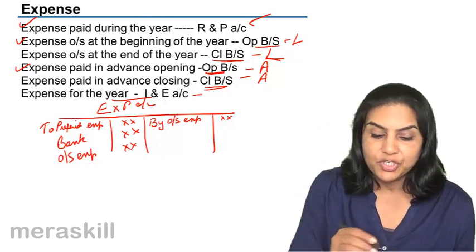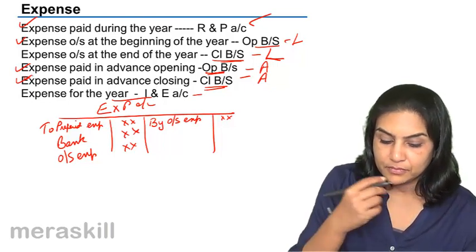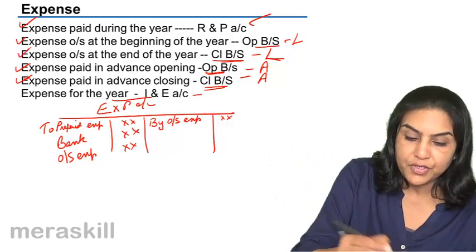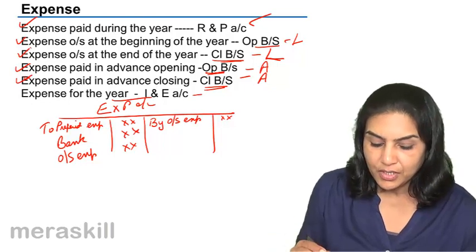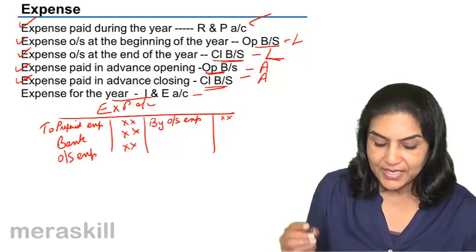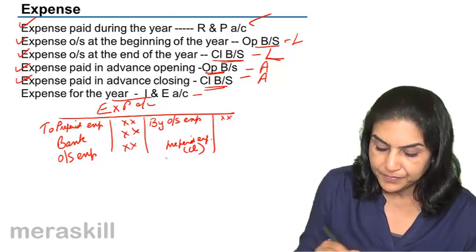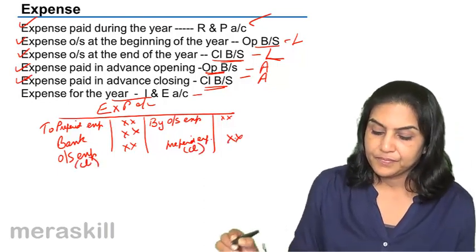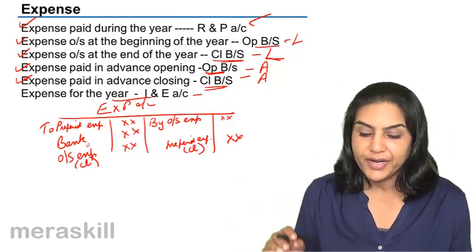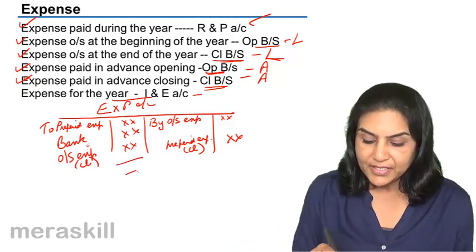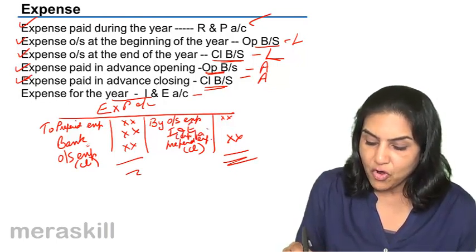Next, expense which is paid in advance at closing: it is prepaid, it is an asset. Asset account debit — credit expense by prepaid expense closing. The expense paid in advance is included in the bank figure; we have to remove it. So credit expense account, debit prepaid expense account. The balancing figure here would be transferred to the income and expenditure account, being expense for the year.